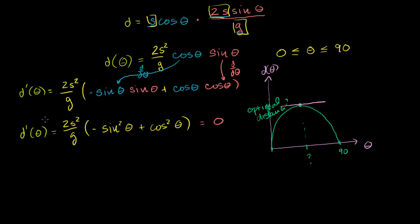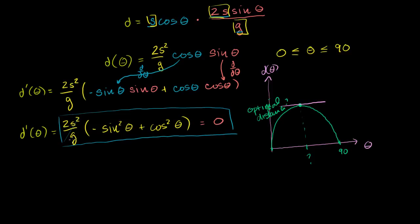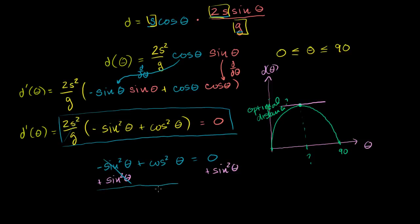To solve for theta, the first thing I would do is divide both sides by 2s² over g. It cancels out on the left-hand side, and dividing 0 by that — assuming it's not 0, which it shouldn't be — still gives 0. So this equation simplifies to: negative sine squared of theta plus cosine squared of theta is equal to 0. If we add sine squared of theta to both sides, those cancel out and we're left with cosine squared of theta is equal to sine squared of theta.